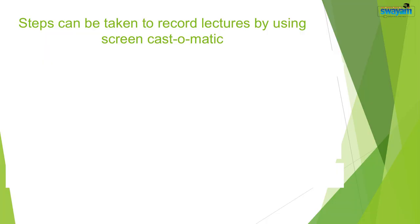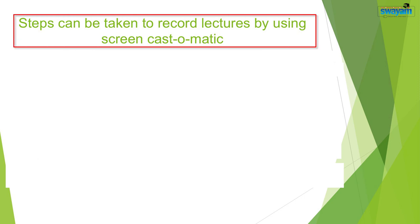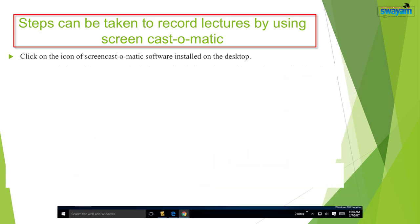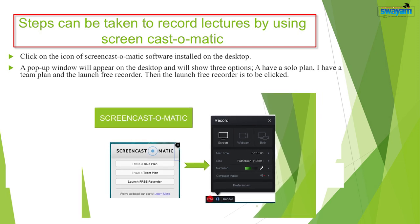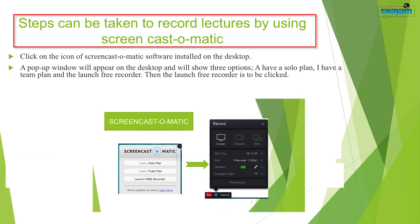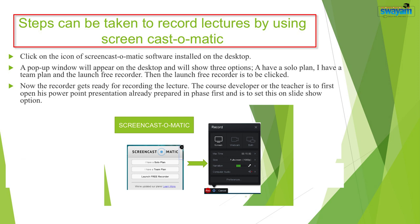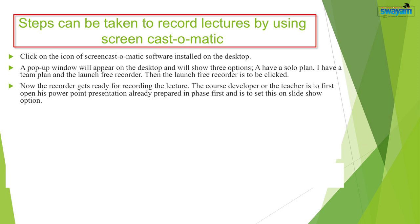The payment for the paid version can be made online with a card or net banking. Click on the Screencast-O-Matic icon on your desktop. A pop-up window will appear showing three options: 'I have a solo plan', 'I have a team plan', and 'Launch free recorder'. Click on 'Launch free recorder'. Now the recorder is ready. First open your PowerPoint presentation prepared in the first phase and set it to slideshow mode so it appears on your screen. Then click the recorder to start recording.